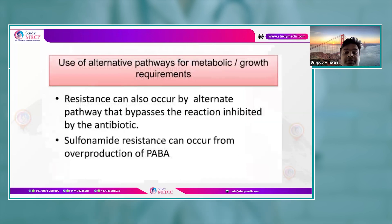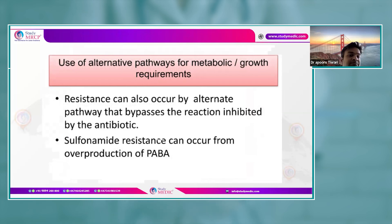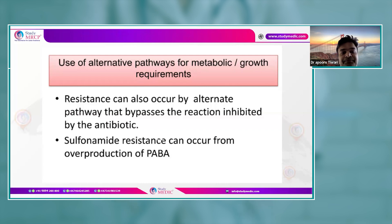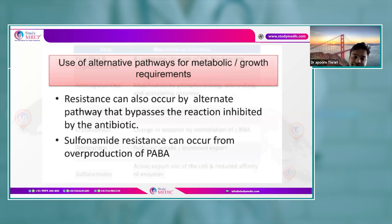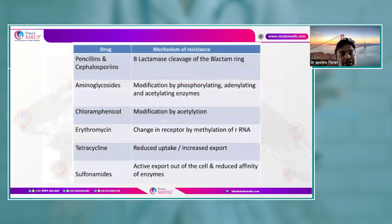Some bacteria use alternative pathways for metabolism or growth requirements. If antibiotics try to inhibit cell wall or protein synthesis, these bacteria acquire alternative metabolic pathways. A famous example — likely to appear in MRCP Part 1 — is sulfonamide resistance by overproduction of PABA within the bacterium.